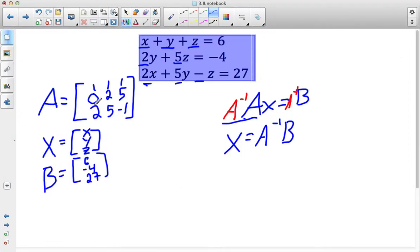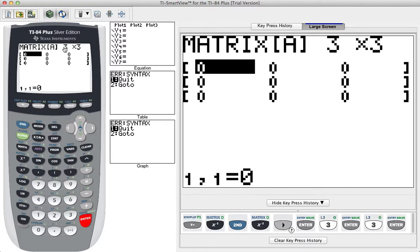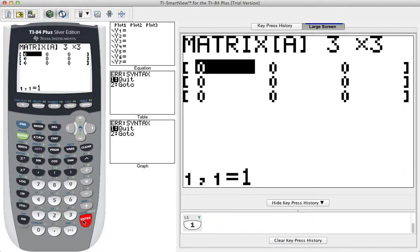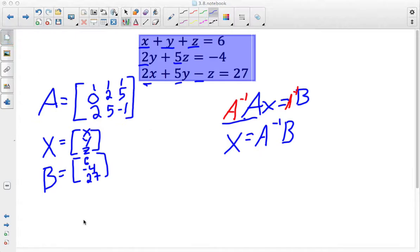This is going to be my matrix A here. This is going to be a 3 by 3 matrix, so I hit 3 enter, 3 enter for my dimensions up here, and now it gives me a 3 by 3 grid. So the first row is going to be 1, 1, 1. My second row is 0, 2, 5.